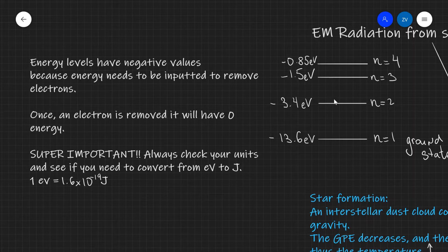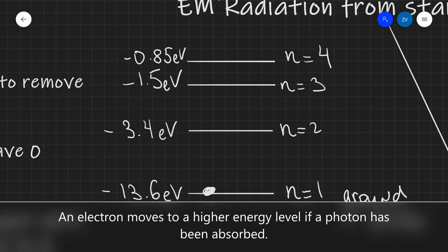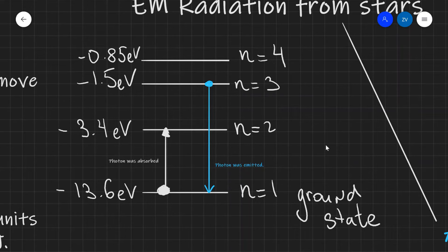Because of conservation of energy, if an electron jumps up an energy level — for instance from energy level 1, the ground state, to energy level 2 — this means that a photon must have been absorbed. On the other hand, if an electron goes down in energy level, for instance from n = 3 to the ground state, this means that a photon must have been emitted due to energy conservation.